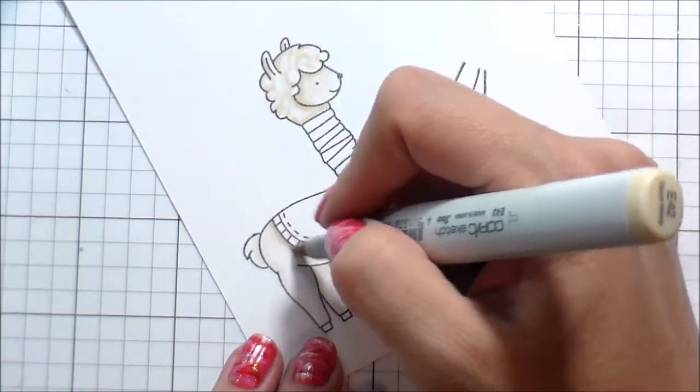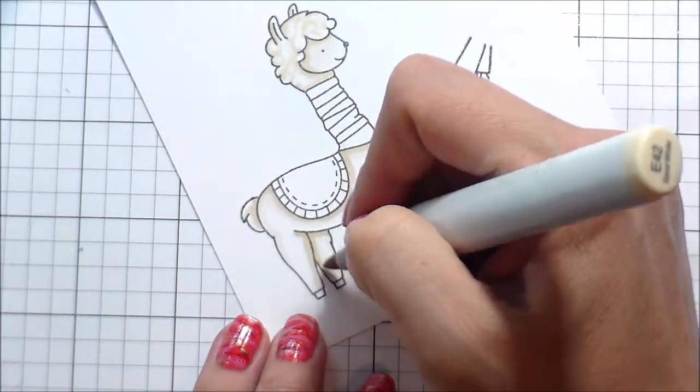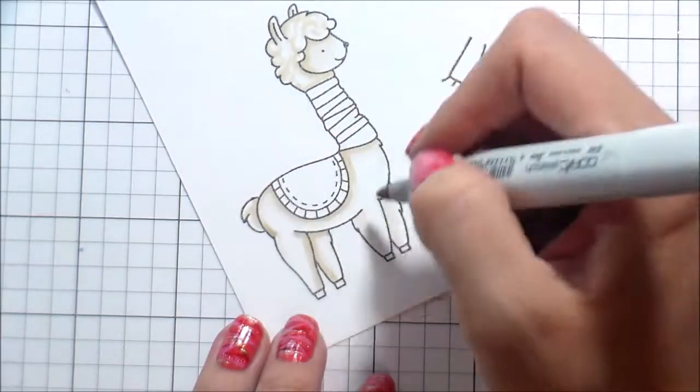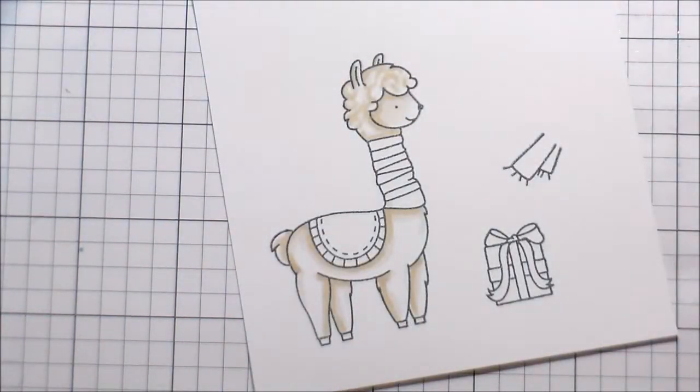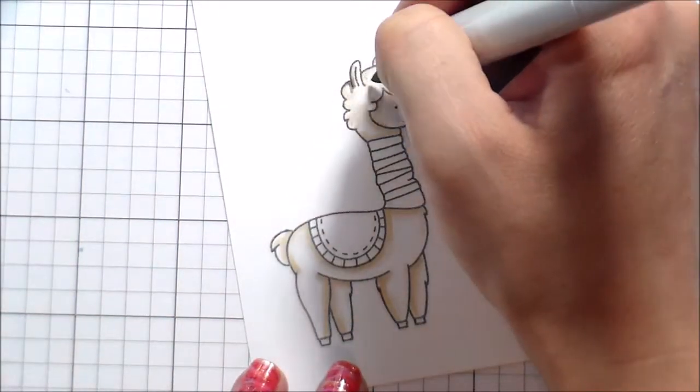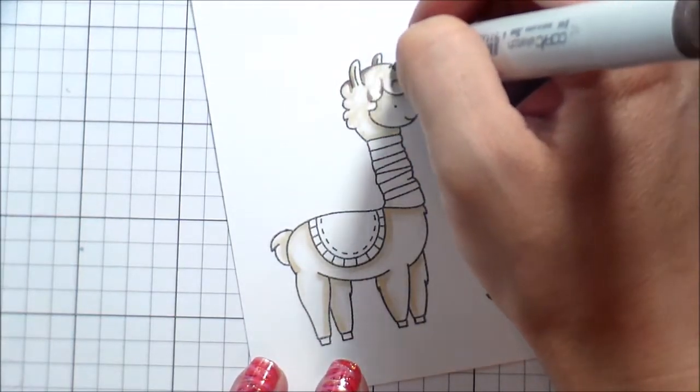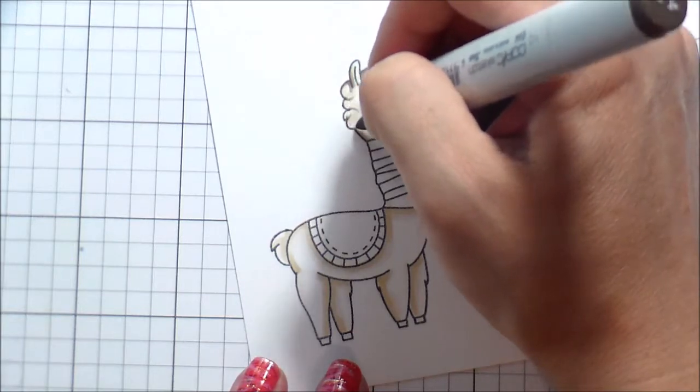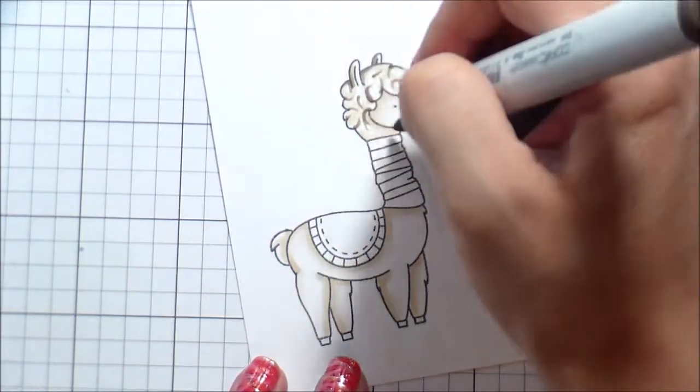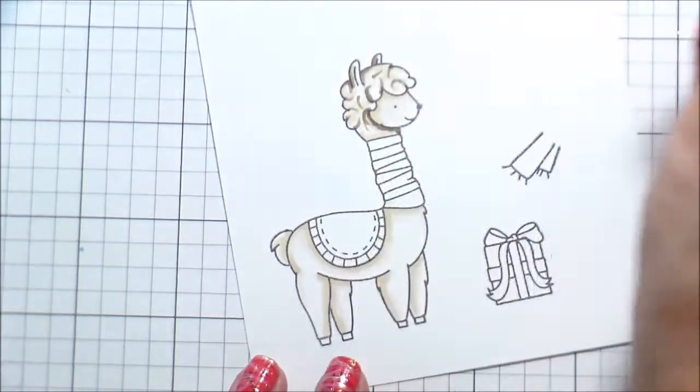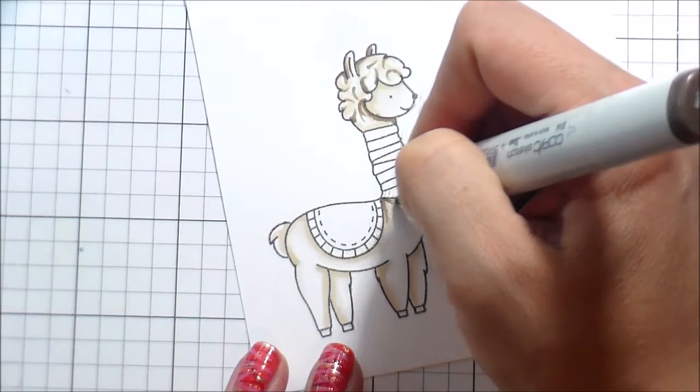Where that scarf comes down, where his saddle comes down, that would all be darker. His tail's behind his cute little tushy, so that would be darker. Those are some areas where I am adding the shading. I start with my lightest color, work out to the darkest from the darkest back into the lightest. That's how I feel like I get the best blend, but you can do whatever works for you.